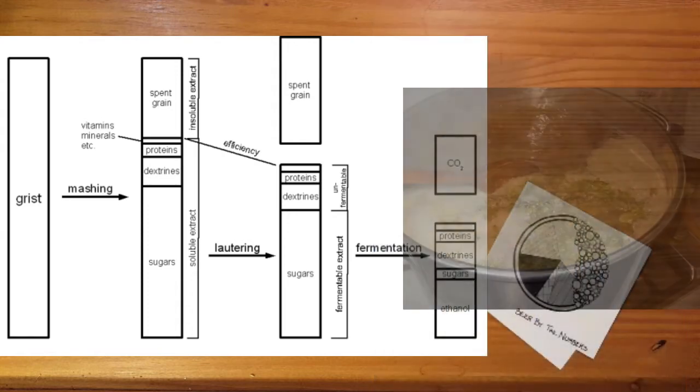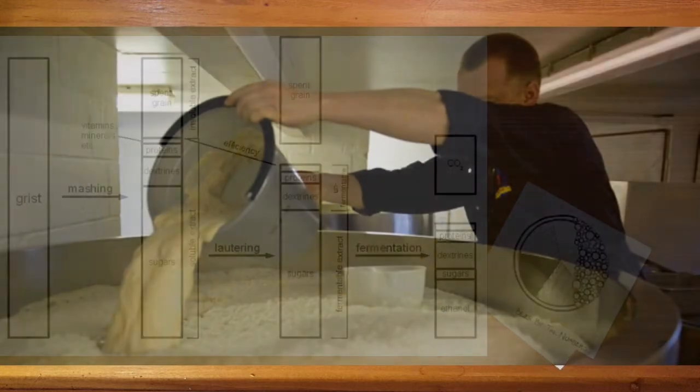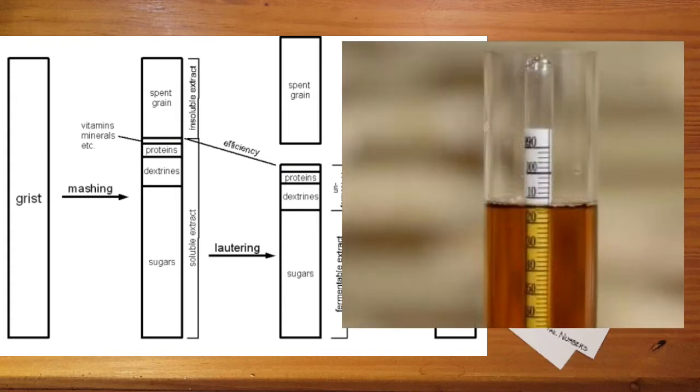The wort is then boiled and hops are added. Once all the additions are complete and have had enough time to break down properly, the wort is cooled, transferred to a fermenter, and yeast is added. It's at this point the brewer will usually take a gravity reading using a hydrometer to have a baseline to compare against after fermentation.